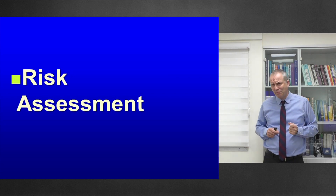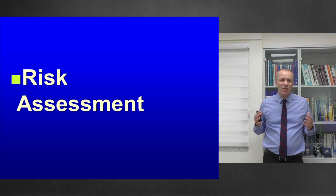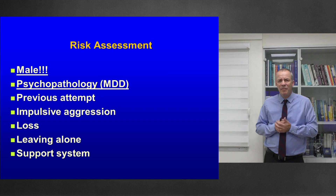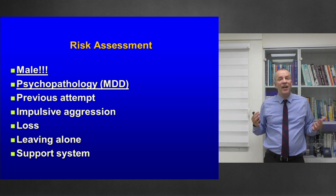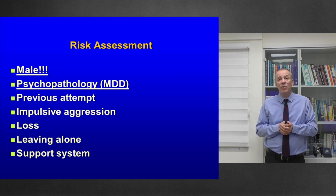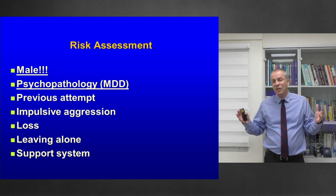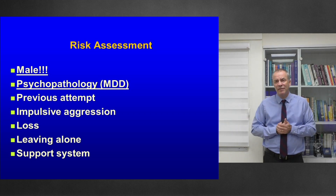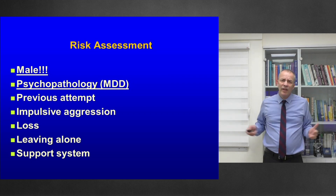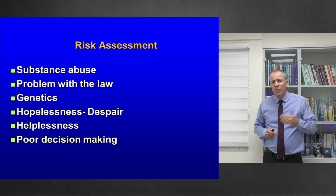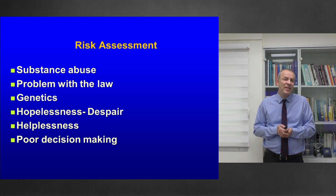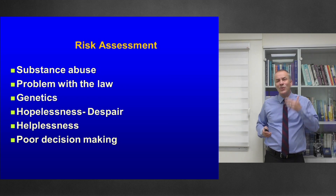For risk assessment, there are major risk factors to ask about: being male — males commit suicide five times more than females; psychopathology, especially depression with 20% lifetime prevalence; previous attempt, although many male completers never attempted before and their first attempt is their last; impulsive aggression; loss; living alone or loneliness — which is subjective, not objective; lack of a support system; substance use; legal problems; genetics — suicide runs in families; hopelessness, despair, helplessness; and poor decision making. Suicide is a decision — a bad solution to a temporary problem.